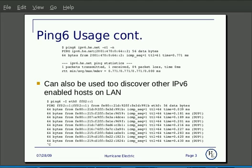This will send out an IPv6 ICMP packet to all hosts on your LAN and report back any IPv6-enabled hosts with their link-local address as a duplicate packet.